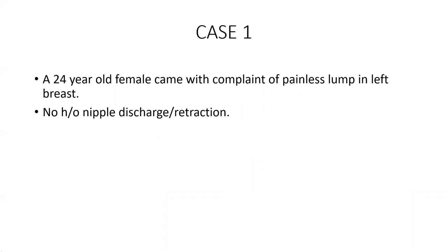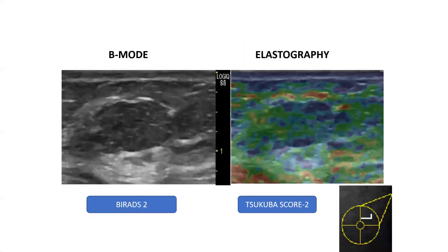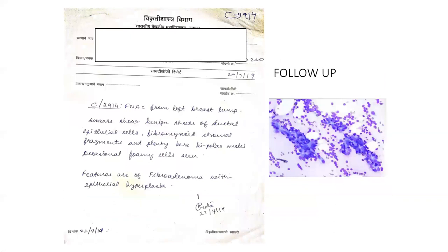Case 1: a 24-year-old female presented with a painless lump in the left breast with no history of nipple discharge or retraction. B-mode ultrasound showed a well-defined round to oval lesion in the upper outer quadrant of the left breast with irregular margins at places, appearing wider than taller with no calcifications and no architectural distortion or ductal involvement — assigned BIRADS 2. On elastography, mixed blue and green areas were seen with a mosaic pattern, indicating deformability — assigned a score of 2. Follow-up confirmed fibroadenoma with epithelial hyperplasia, consistent with benign findings.